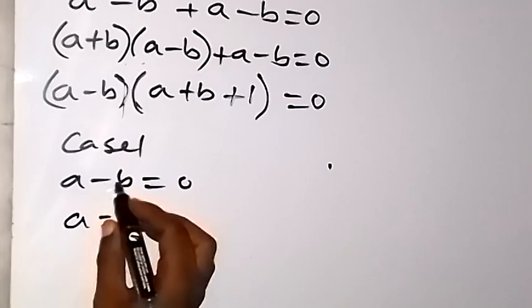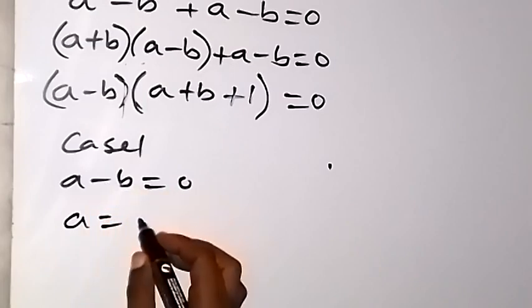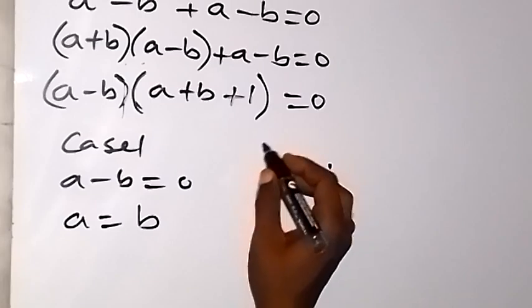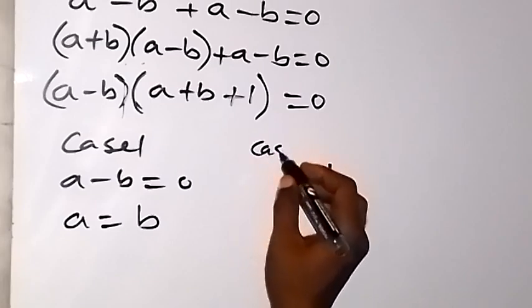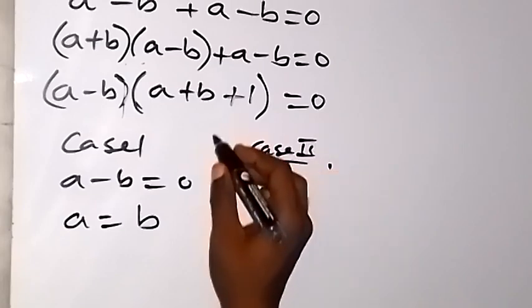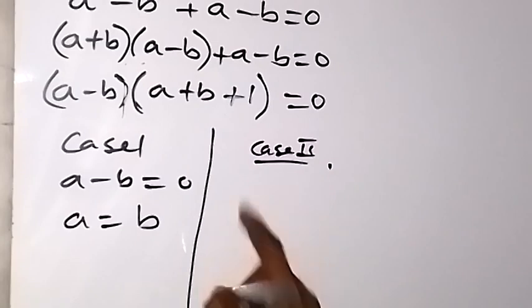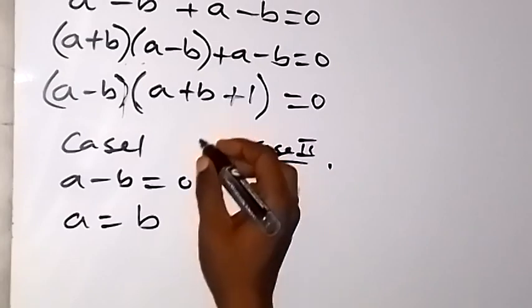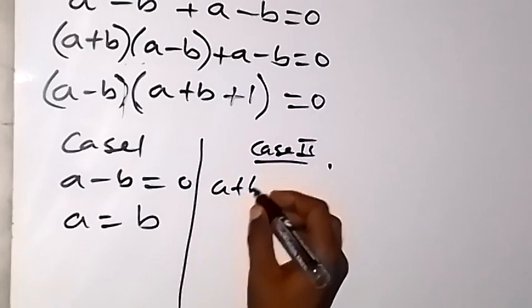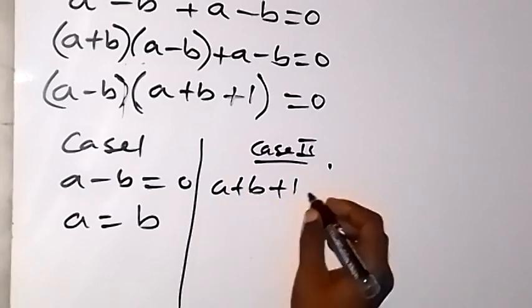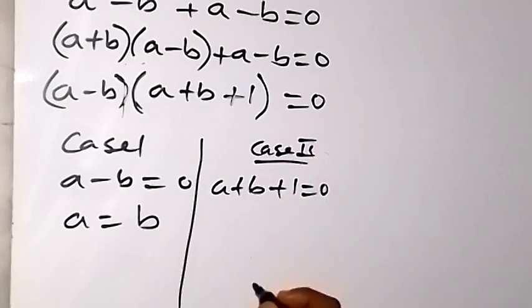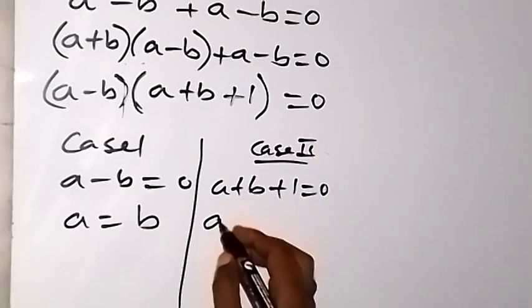From case 1, a equals b. For case 2, a plus b plus 1 equals 0.